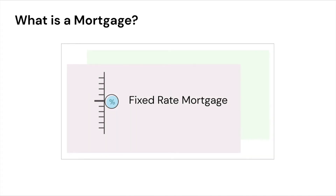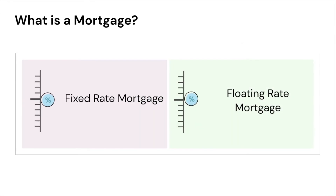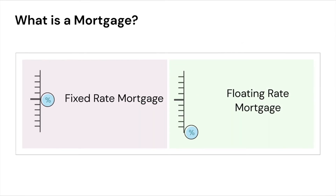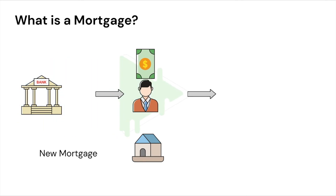Sometimes mortgage loans have a fixed interest rate for the term of the loan — these are called fixed rate mortgages. Sometimes the interest rate fluctuates depending on the conditions in the economy — these are called floating rate mortgages.